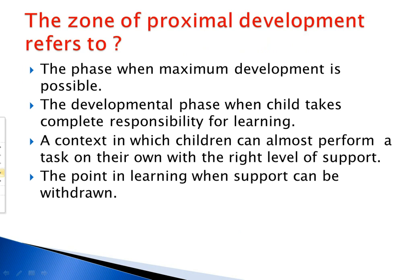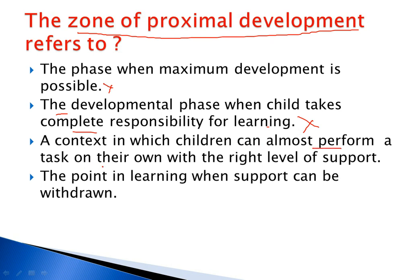Question 9: The zone of proximal development refers to what? Option A: 'The phase when maximum development is possible' — not correct. Option B: 'The developmental phase when a child takes complete responsibility for learning' — also not correct. Option C: 'A context in which children can almost perform a task on their own with the right level of support' — this is correct. Option D: 'The point in learning when support can be withdrawn' — not correct. The correct option is C — a context where children can almost perform a task on their own with the right level of support.